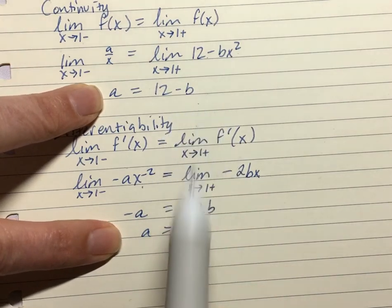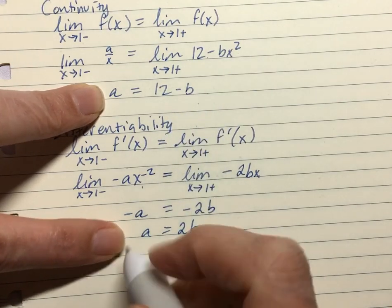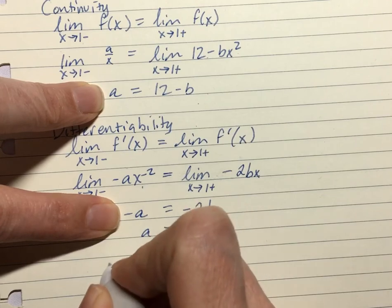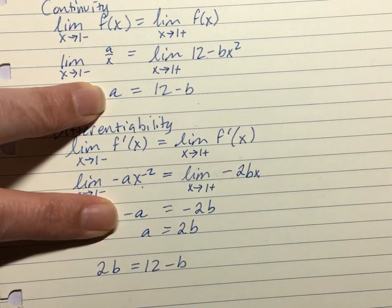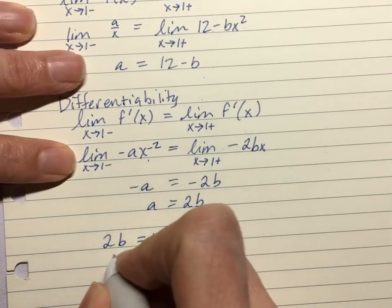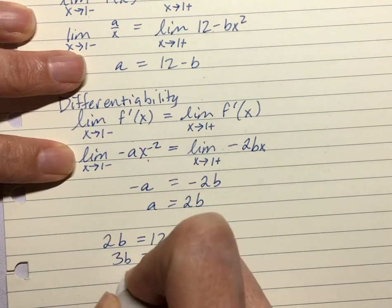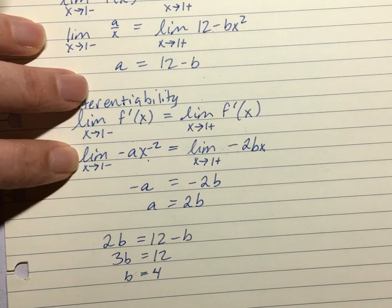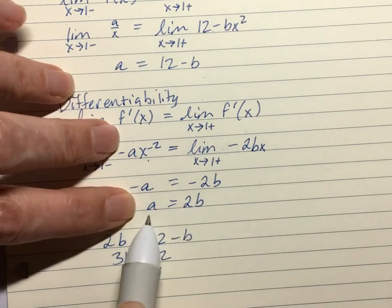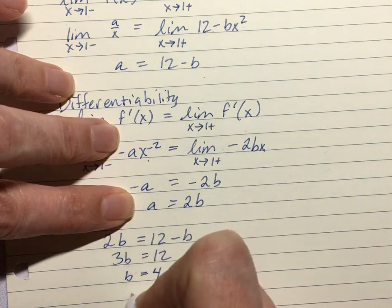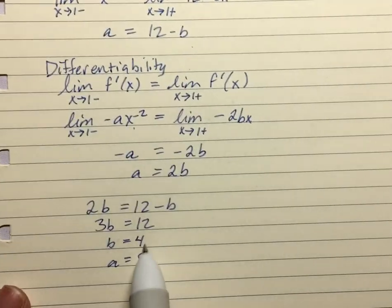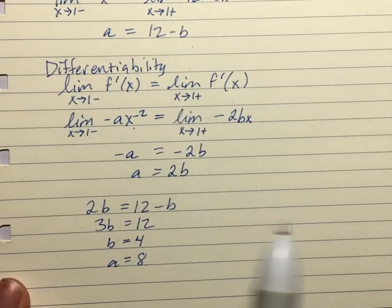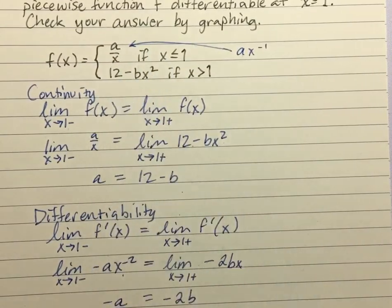A equals 12 minus b and a equals 2b. So that means that 2b is equal to 12 minus b. So that means 3b is 12 and b is 4. And if b is 4, that means a is 8.